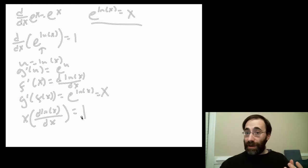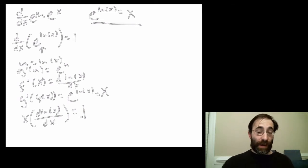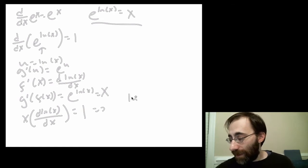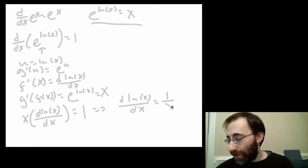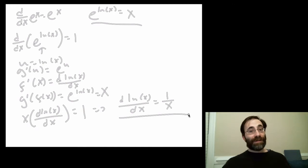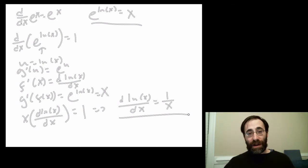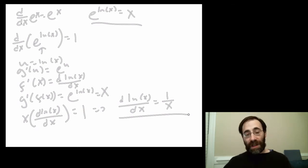As long as x is not 0 — in which case the natural log isn't defined anyway — we can divide by x. This gives us the answer: the derivative of the natural log of x with respect to x equals 1 over x. That's it. So it's not quite as simple as the exponential, but the derivative of the natural log is equal to 1 over x.